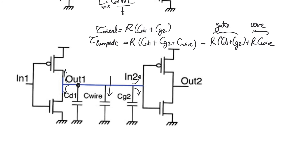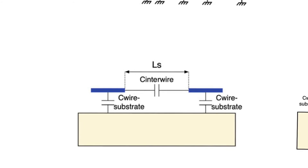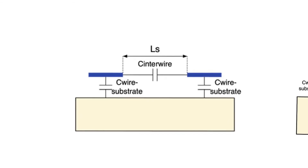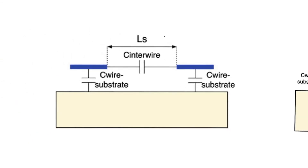At this point it's important to discuss another kind of capacitance observed in wires. Looking at two wires drawn for an older technology — wires that were a little thinner, wider, and separated by more distance — we always talk about wire-to-substrate capacitance. But there is another capacitance: the interwire capacitance, which is the capacitance observed between two adjacent wires rather than between one of them and the substrate.